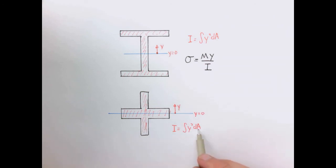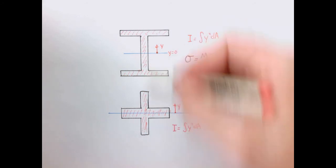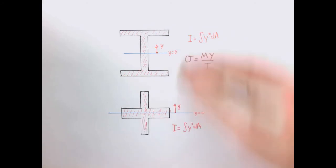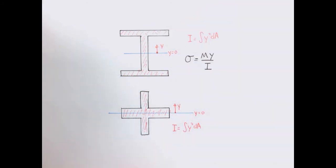And so even though these two cross sections can have the same area, this one will have a much larger moment of inertia than this one, due to the large concentration of area, a large distance from the neutral axis.